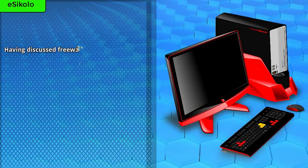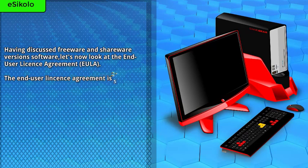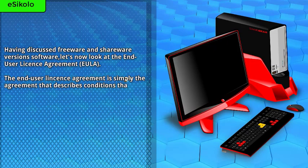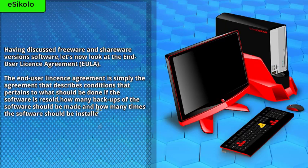Having discussed freeware and shareware versions of software, let's now look at the end-user license agreement, or EULA. The end-user license agreement is simply the agreement that describes conditions pertaining to what should be done if the software is resold, how many backups of the software should be made, and how many times the software should be installed on computer systems.